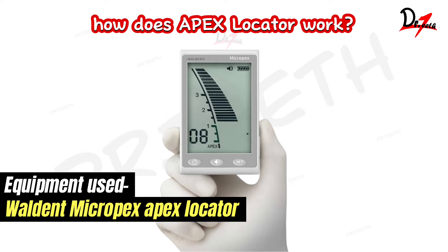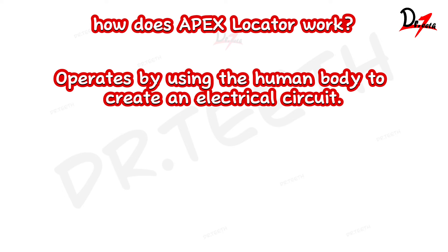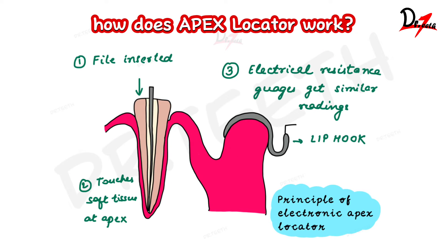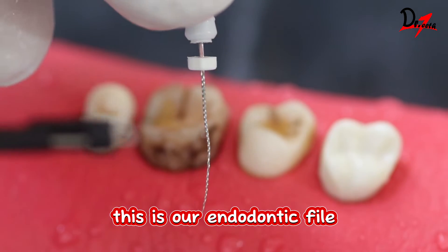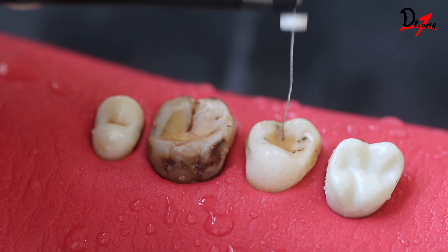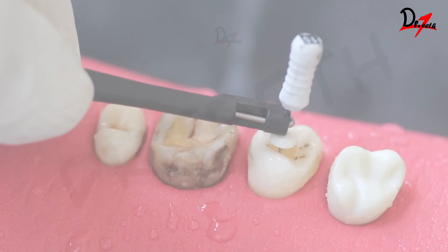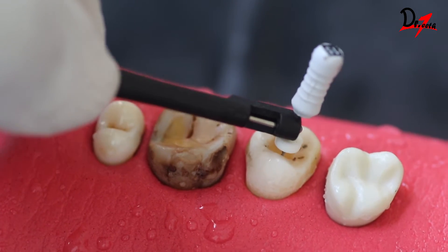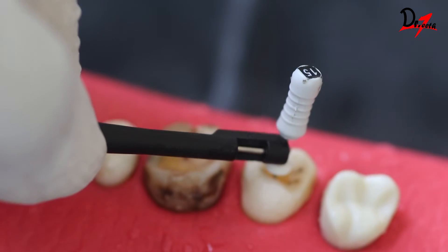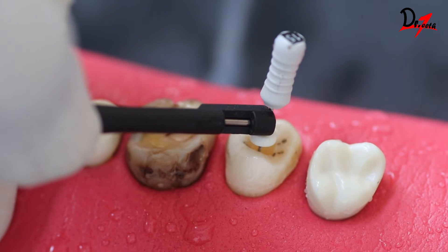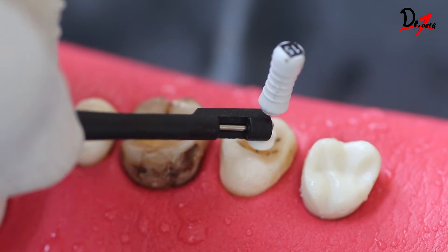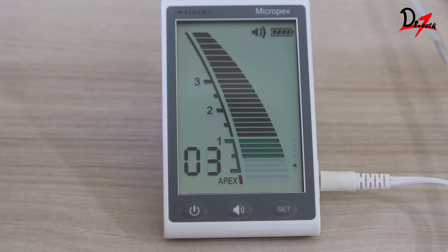How does an Apex Locator work? All electronic Apex Locators operate by using the human body to create an electrical circuit. One part of the circuit is connected to the oral mucosa through a lip clip, while the other side is connected to a file. When the file is inserted into the root canal and moved towards the apex until its tip touches the periodontal tissues, the electrical circuit is completed. At this point, the electrical resistance of the Apex Locator and the resistance between the file and the oral mucosa becomes equal, and this equality triggers the device to indicate that the apex has been reached.